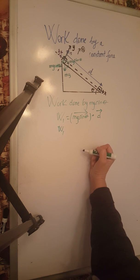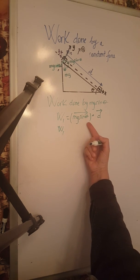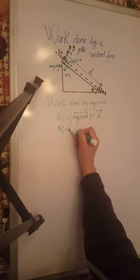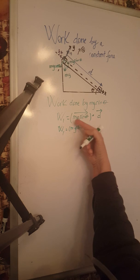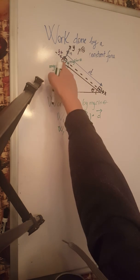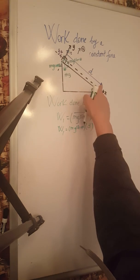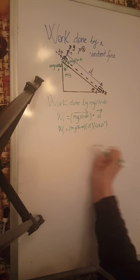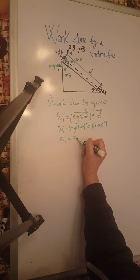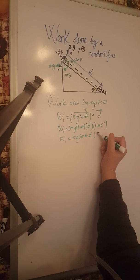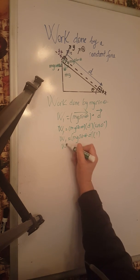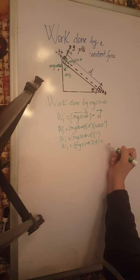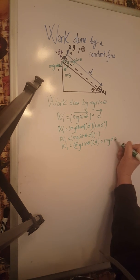The dot product of two vectors equals the magnitude of one vector times the magnitude of the other, times the cosine of the angle between them. So we have mg sine theta times d times cosine of the angle between them. Since mg sine theta in green and d in blue both go down the ramp — parallel to the ramp — the angle is 0 degrees. Cosine of 0 degrees is 1, giving us mg sine theta times d, which we rewrite as mgd sine theta.